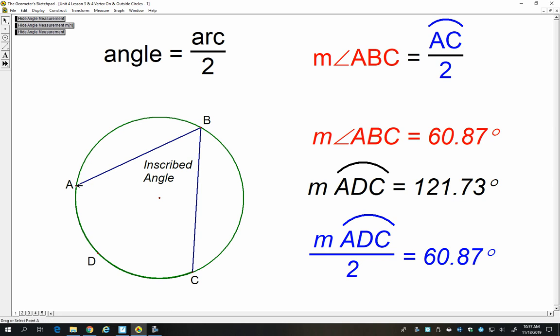And so just to show you that that's not going to change, I'm going to move around one of my points. And you can see that my angle is still equal to my arc divided by two.